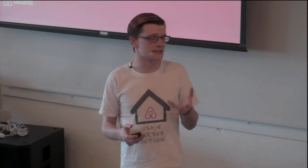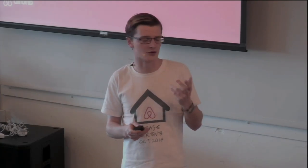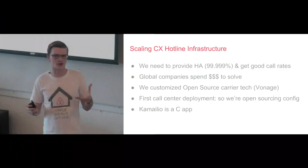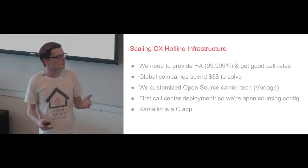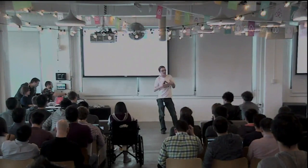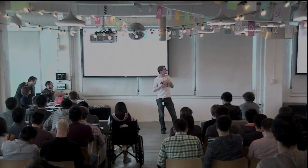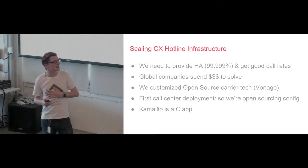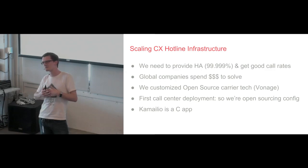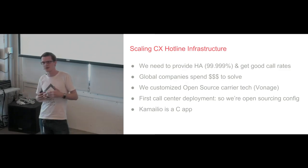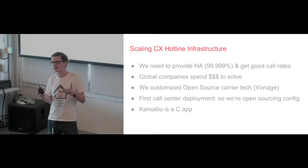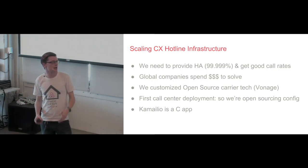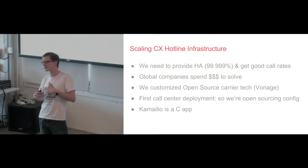One of the components we use is Camellio. It's the Hawaiian word for 'to talk or converse,' and it's the infrastructure we use to connect our hotlines to our agents. We need to provide a lot of uptime for this — we need our customers when they call our CX hotlines to get through 99.999% of the time. Most companies of our size spend many hundreds of thousands or millions of dollars to solve this, but we took open source software that's used by Google Voice or Vonage and customized it for a call center deployment for the first time. It's a C application, and the original developers haven't seen it used this way before, so I'm speaking with Jordan and our legal department to open source this for other companies.